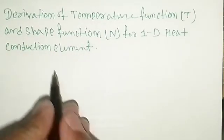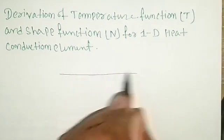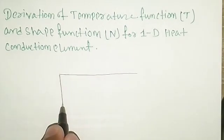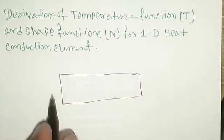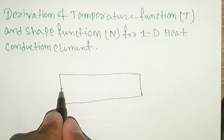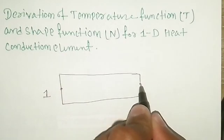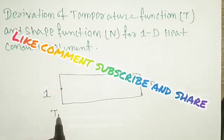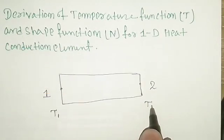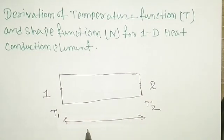For that, we have to consider one bar element of one dimension. This bar element has node 1 and node 2, such that it has 2 degrees of freedom at each node. The temperature at node 1 is T1 and at node 2 is T2, and the length of the bar element is L.